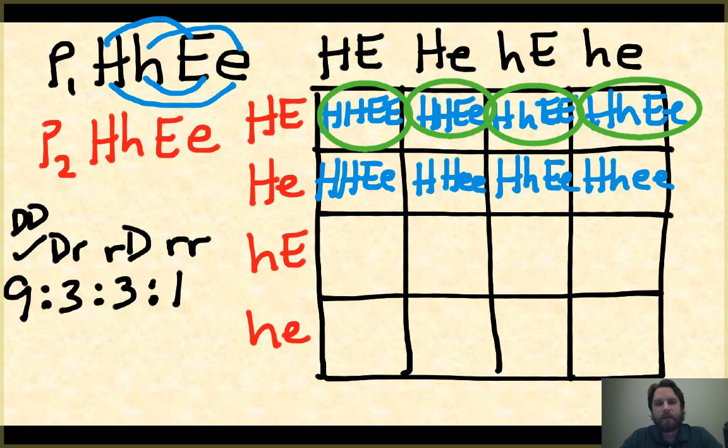If I were to ask you a question that said, how many in this dihybrid cross would show a recessive trait for both genes that we're looking at? You would look at this, do the math and everything, and you would find 1 out of 16 would show that. Now this is the long way to do it. You can make a 16 grid test cross here.